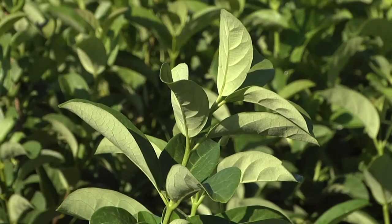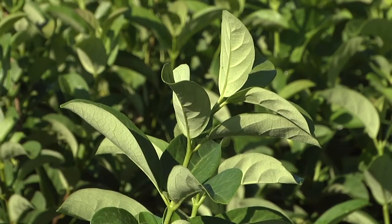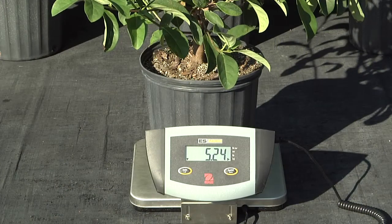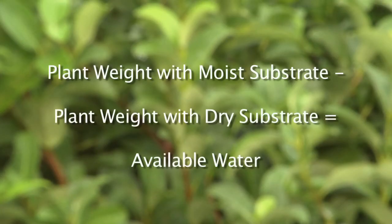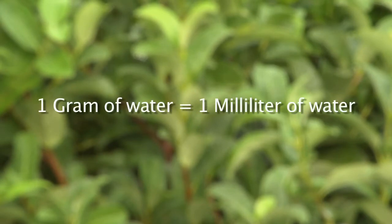When plants begin to wilt, indicating the substrate is dry, weigh each of the same plants again. Subtract the weight of each plant with dry substrate from the weight of each plant with moist substrate and average the values. The difference in weight is the amount of available water. This weight can be converted to volume because one gram of water equals one milliliter of water.